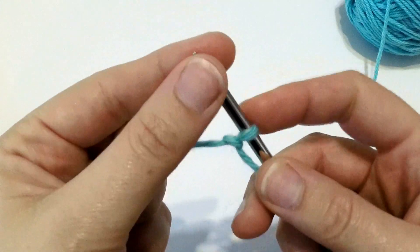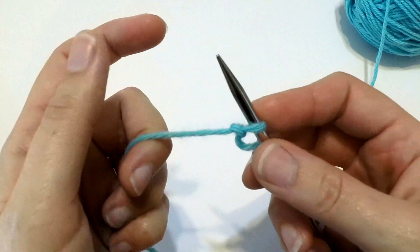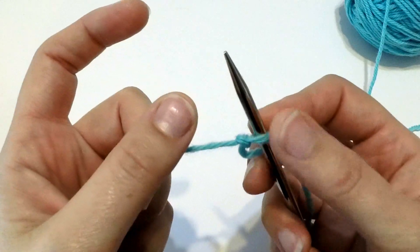So I still have the tail in my hand. I have a slipknot on my right needle, and now we're going to start the cast on, which luckily for us is exactly the same as what we've just done to make the first slipknot.